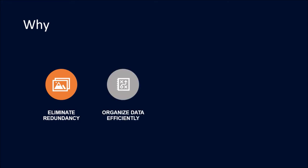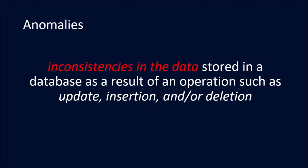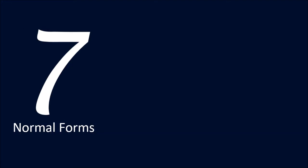When you try to insert, delete, or modify this data it can cause some anomalies. The goals of normalization are: first, eliminating redundancy; second, organizing data efficiently; third, reducing the potential for data anomalies. Anomalies are inconsistencies in the data stored in a database as a result of an operation such as update, insertion, or deletion.